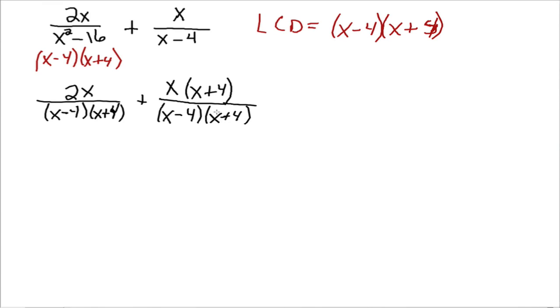Everybody see how we've multiplied the top and bottom of our first fraction here by x plus 4 over x plus 4? So, now again, we see that the denominators are the same, so we can write this as this numerator plus this numerator all over the least common denominator.